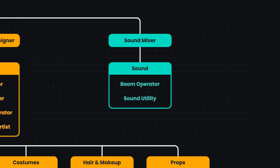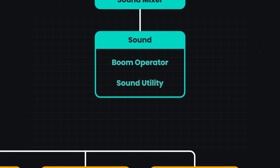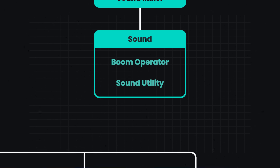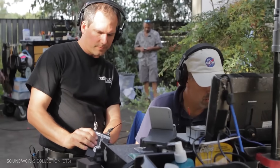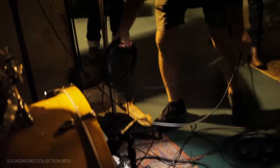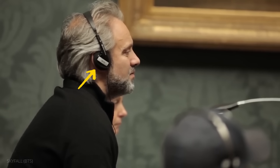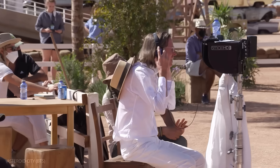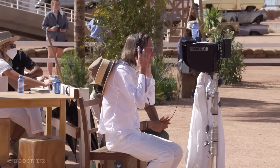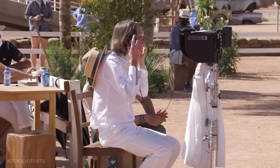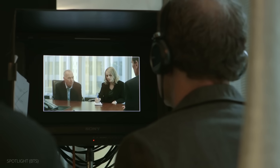Another position in the department is the sound utility. This crew member largely acts as support for the rest of the team — running cables, charging batteries, and organizing gear. They will often be the ones to distribute interruptible foldbacks, or IFBs: headphones for anyone on the crew who needs to hear the sound being recorded, like the director, producers, or script supervisor.